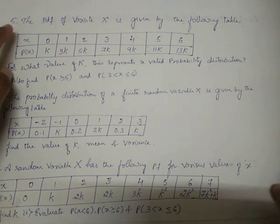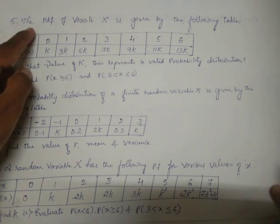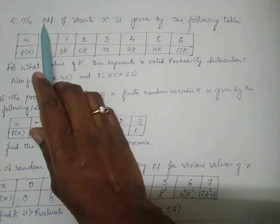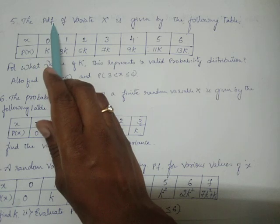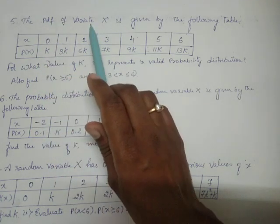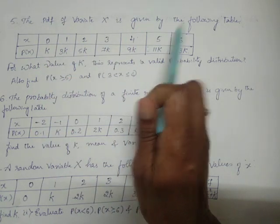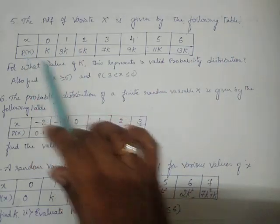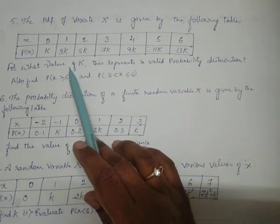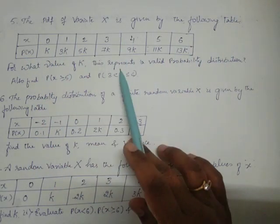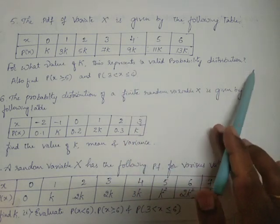Let me read the problems and make you understand. Problem number 5 is: the PDF (PDF means the probability distribution function) of variate X is given by the following table. For what value of k does this represent a valid probability distribution?